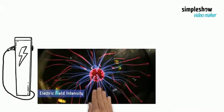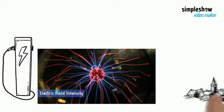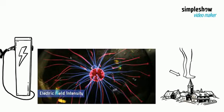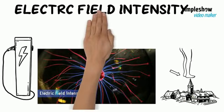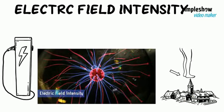Electric field intensity is defined as the strength of the electric field. The electric field is defined as the region where a charge exerts its force on another charge, or the force per unit positive charge is known as electric field intensity.